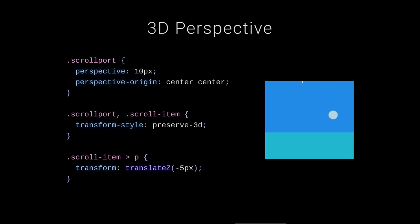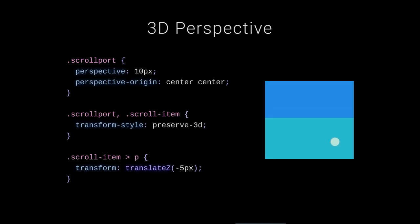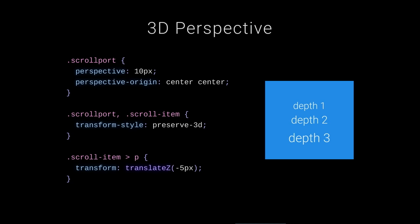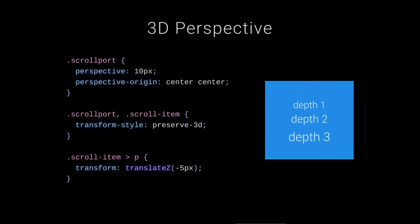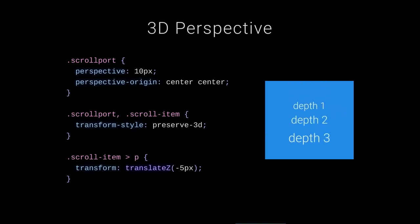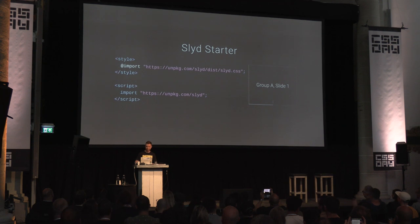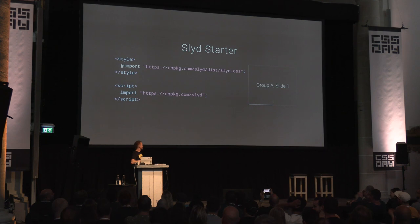Items with more depth have a more extreme parallax effect as you scroll. Here are three items — they look staggered with this beautiful parallax effect. I didn't do that manually; it's just the scroll doing all the work. These slides are built with this framework — I built it in CSS a while ago, it's called 'slidey' because naming things is hard.